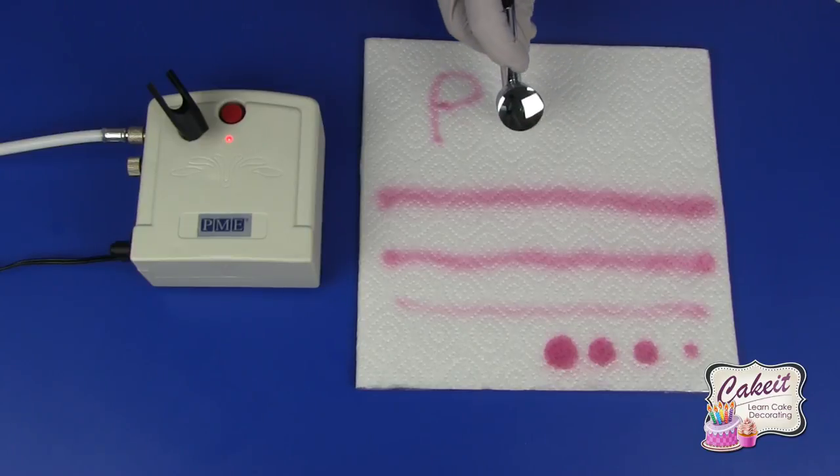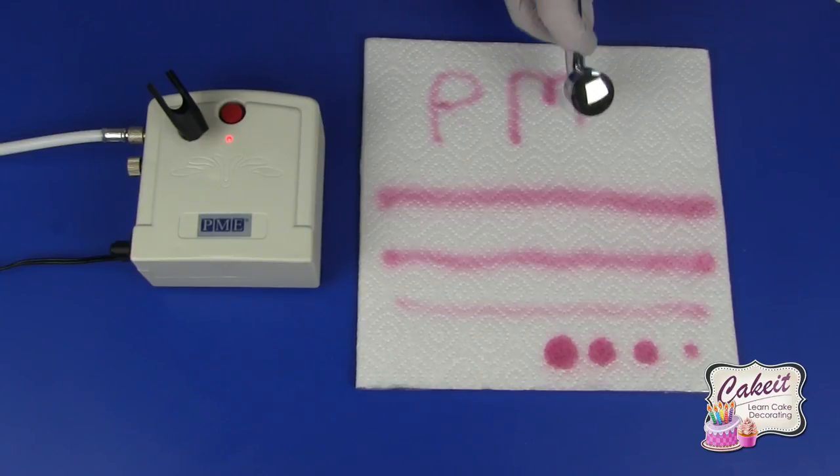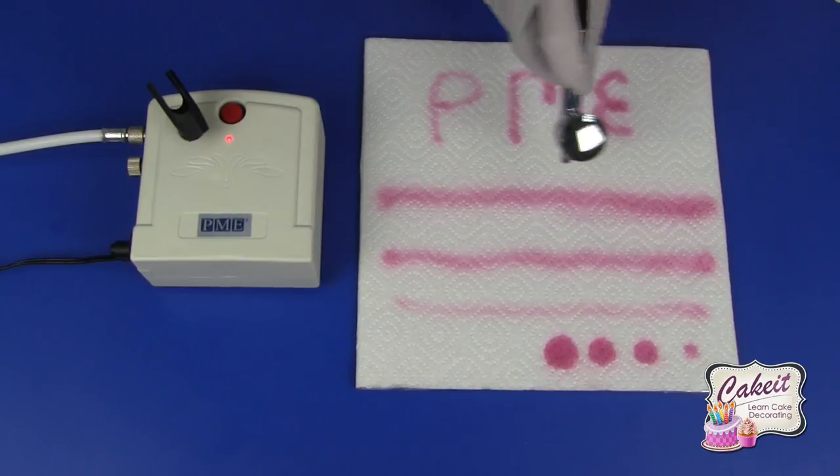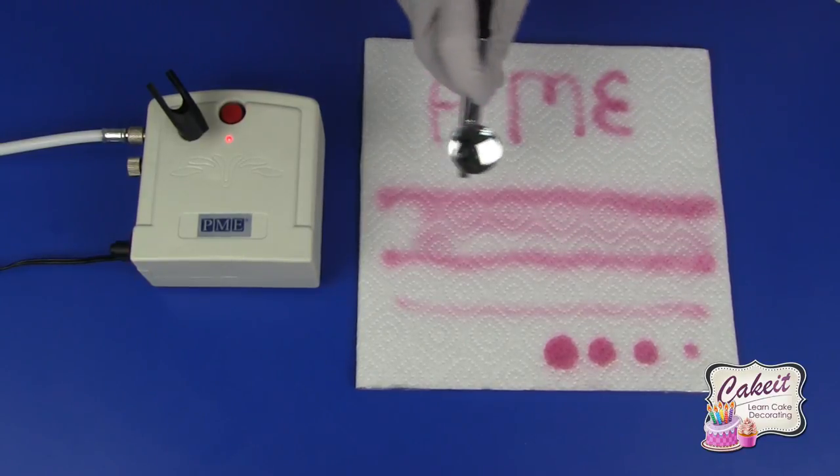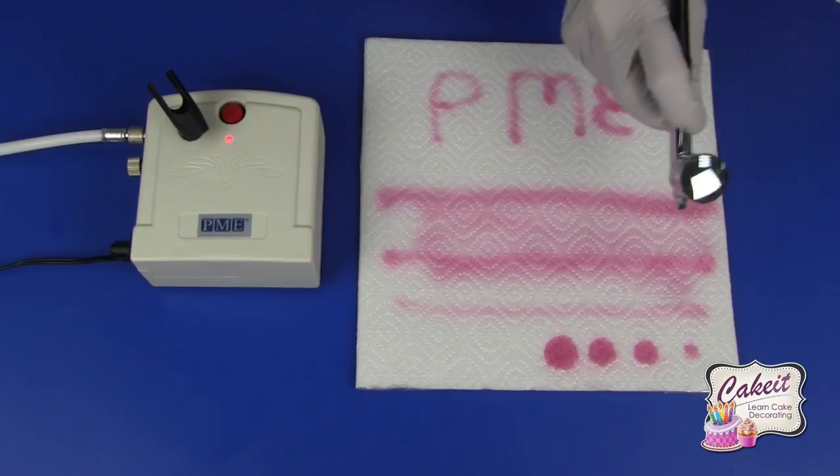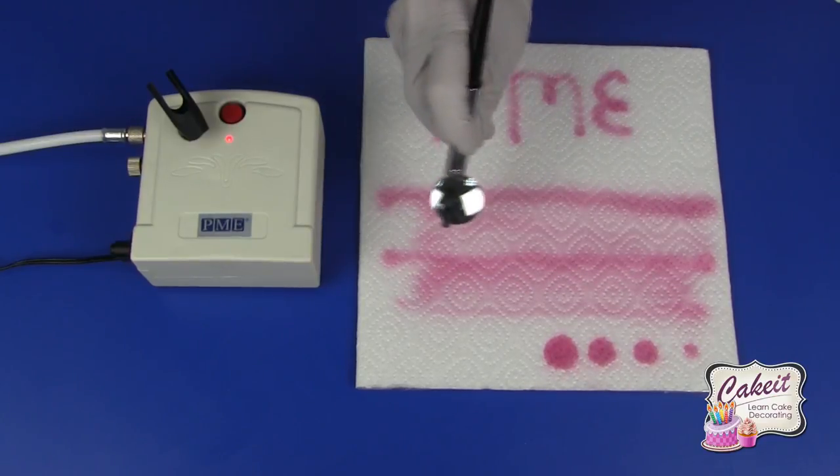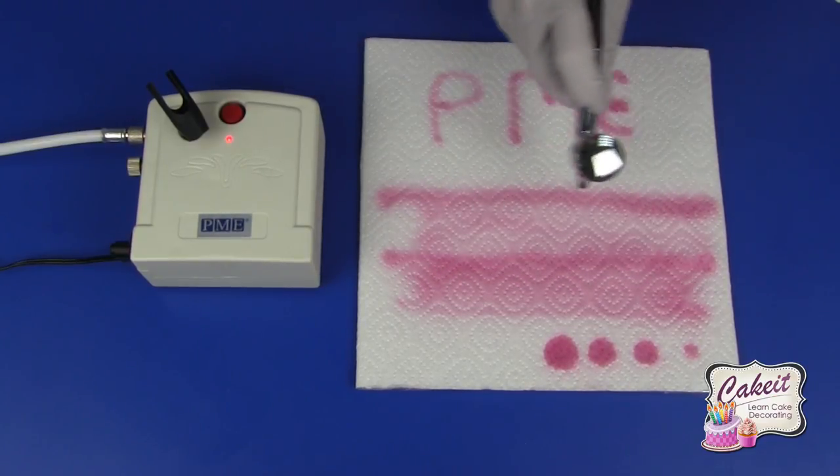And I can create lettering by doing this, and a fine line. By building up using a soft line, I can infill the colour just by to-ing and fro-ing.